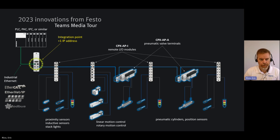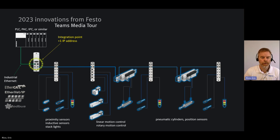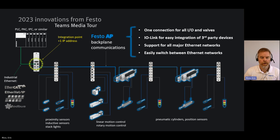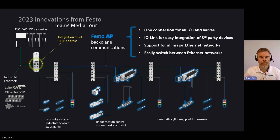CPX AP and CPX APA — the new valve family — are the two key product families in this technology. The key bullet points revolve around what we call the Festo Automation Platform, or AP, which is our backplane communications technology running between these devices. You get one connection or integration point for all I/O and valves. We also support I/O-Link, so this does not have to be only Festo devices — we can integrate third-party devices through our I/O-Link master modules.